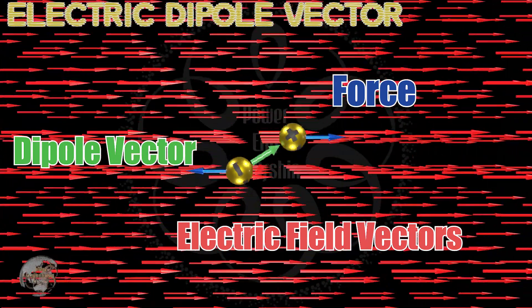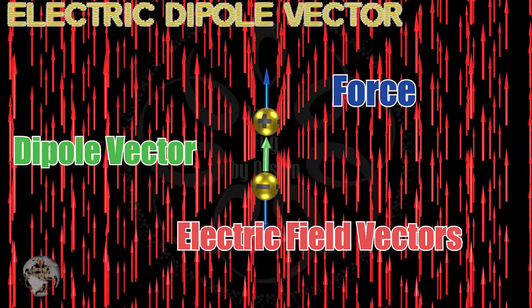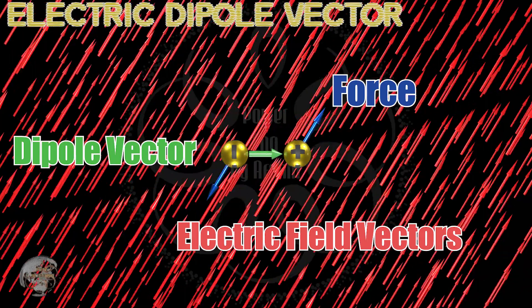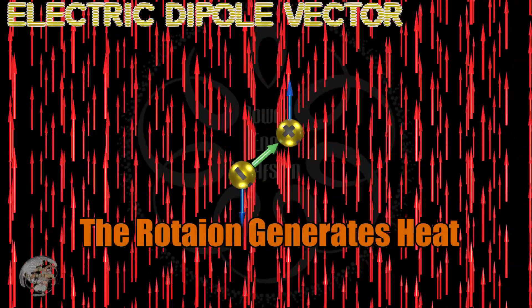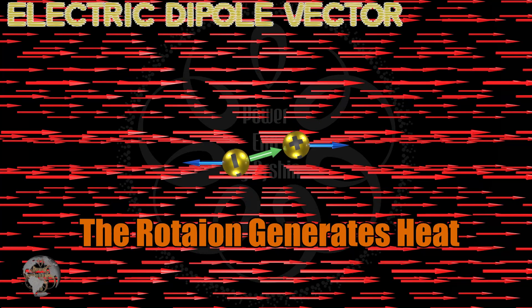Now, if the electric field is variable, the water molecules will rotate in sync with the electric field. This rotation generates heat. This is why microwave ovens can heat food so quickly.